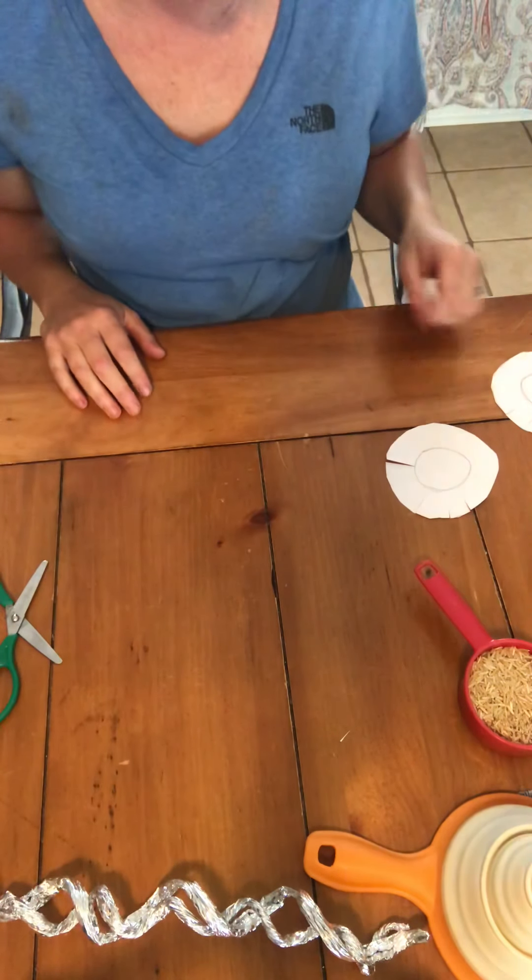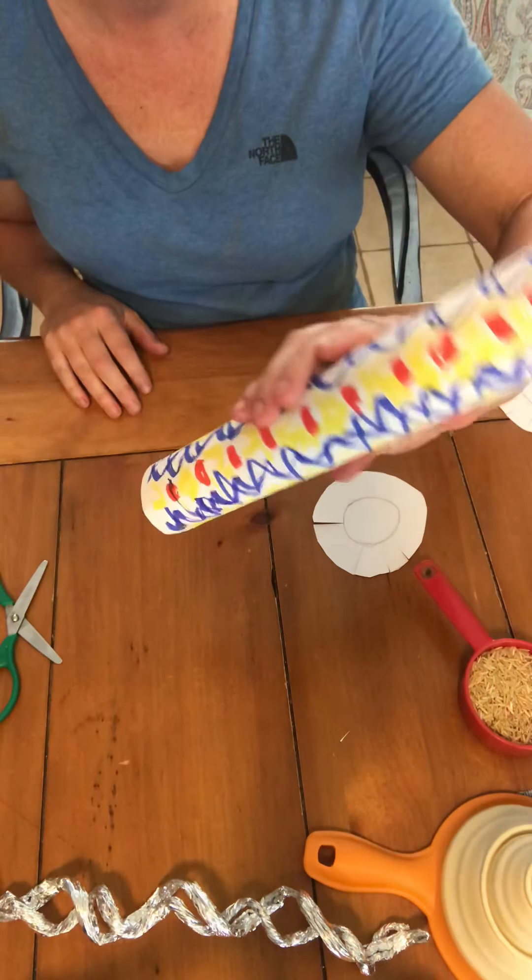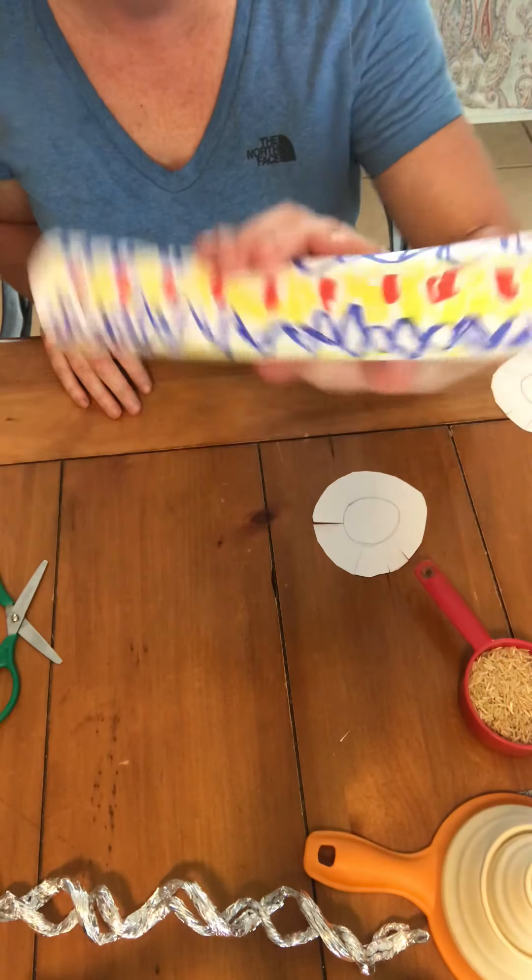Alright, this is the second half of our rain stick art and craft project. So you should have your aluminum foil rolls, and you should have your two pieces of paper that have the small circle that's the same size as the end of the paper towel and has the cuts in them.